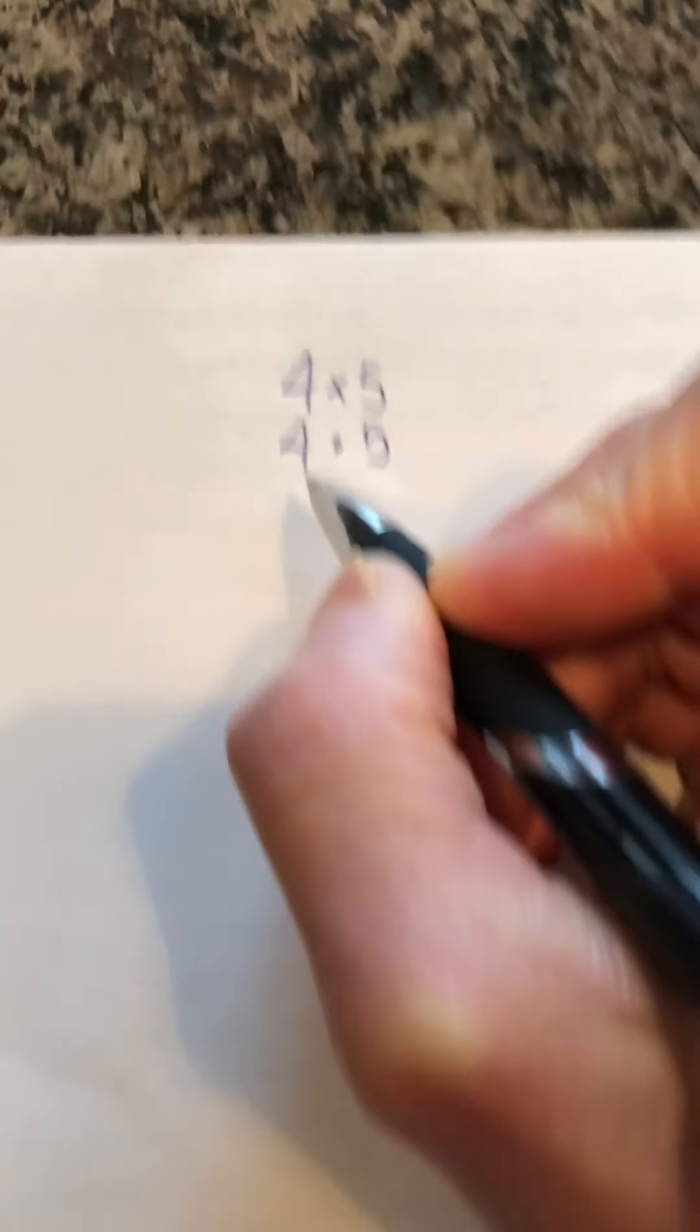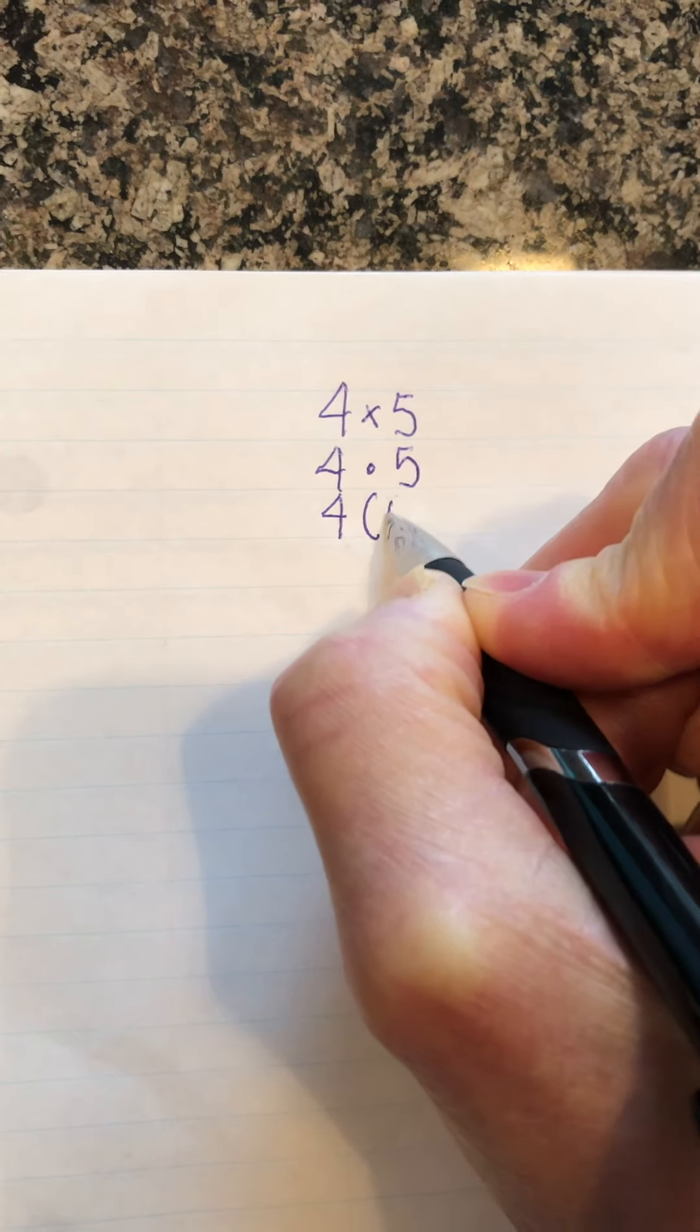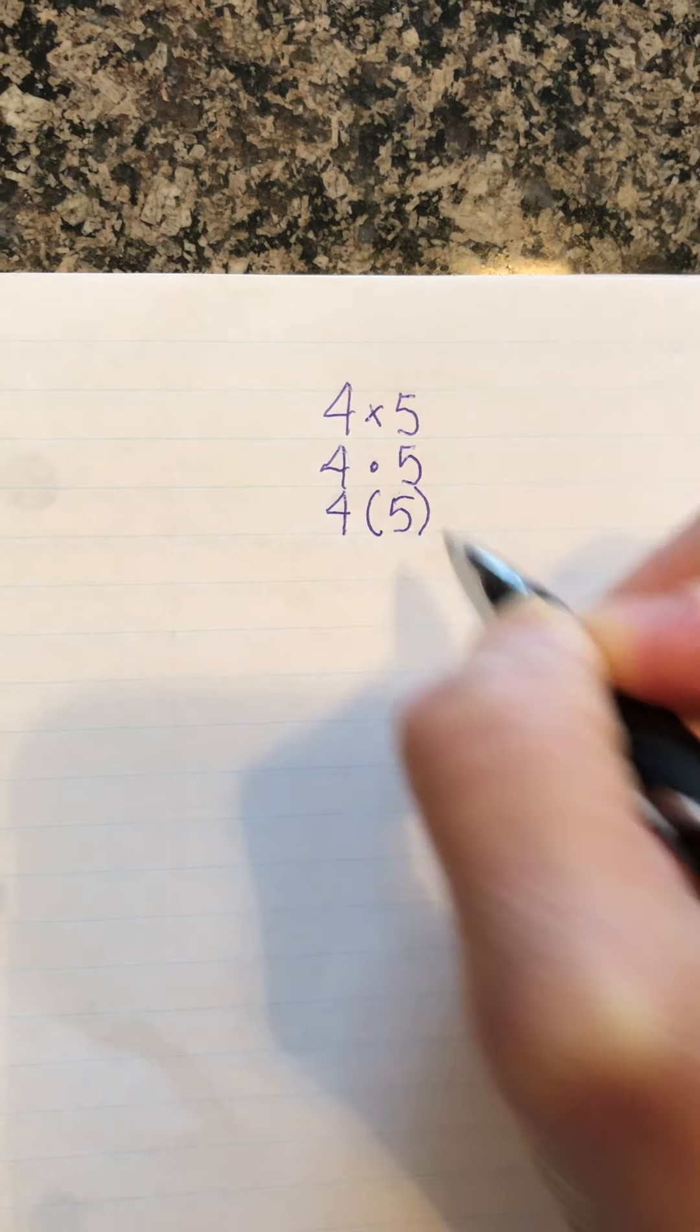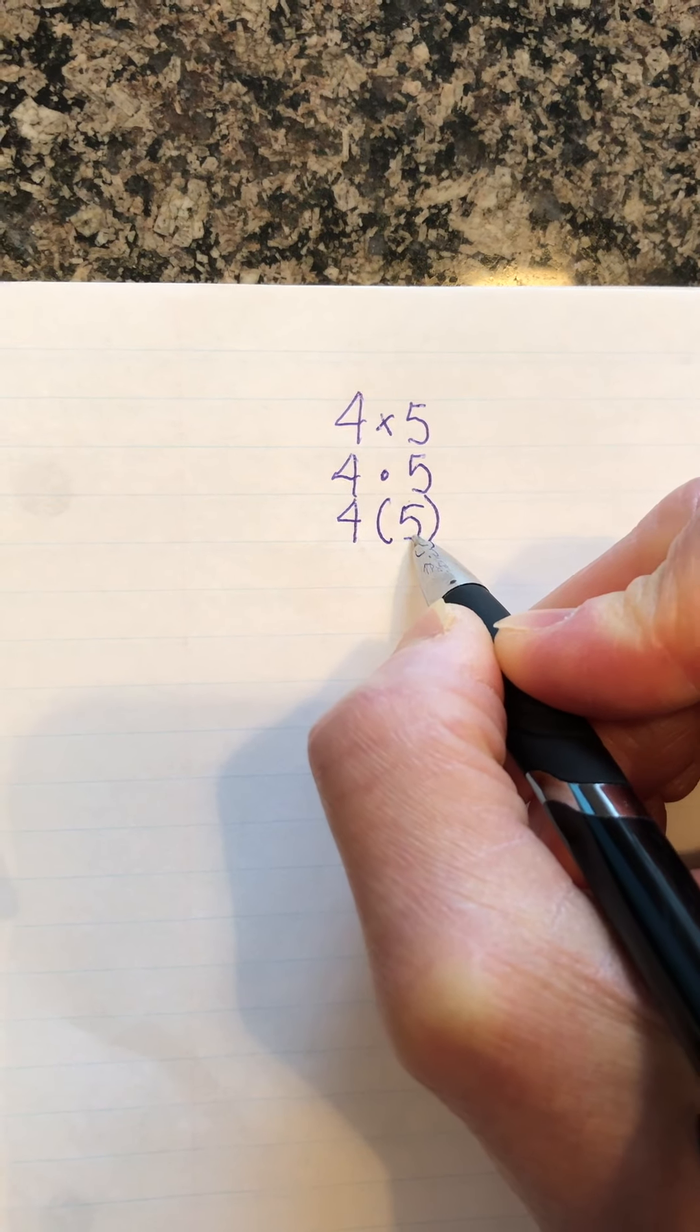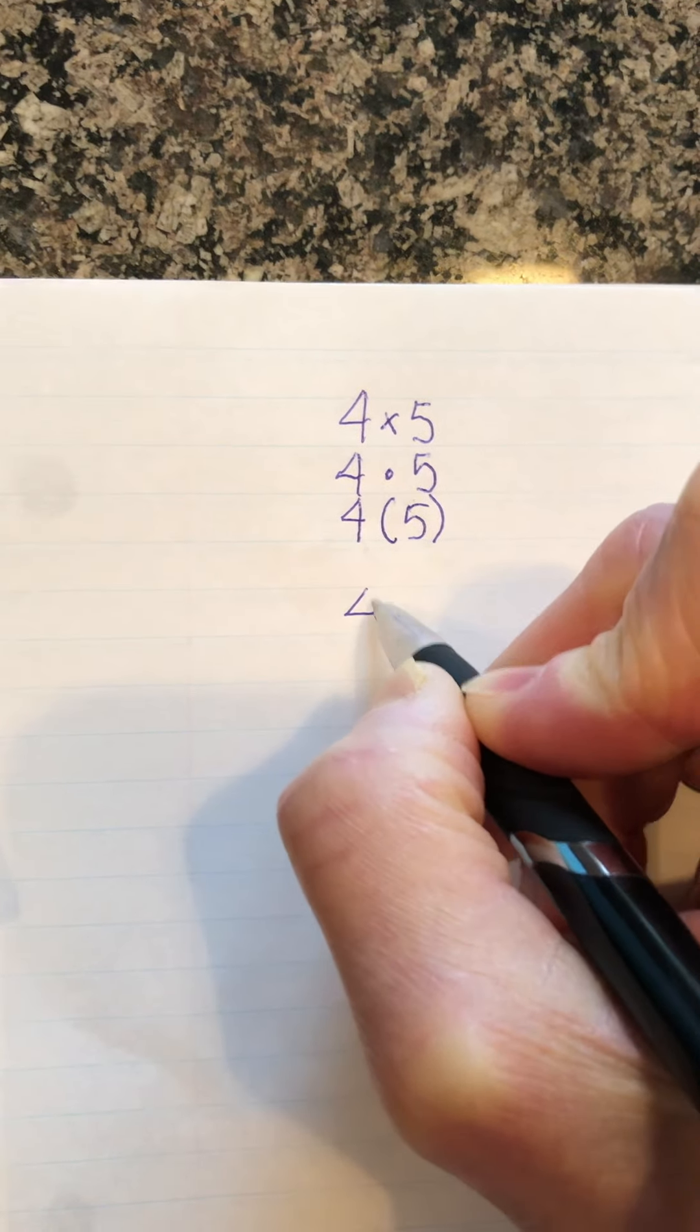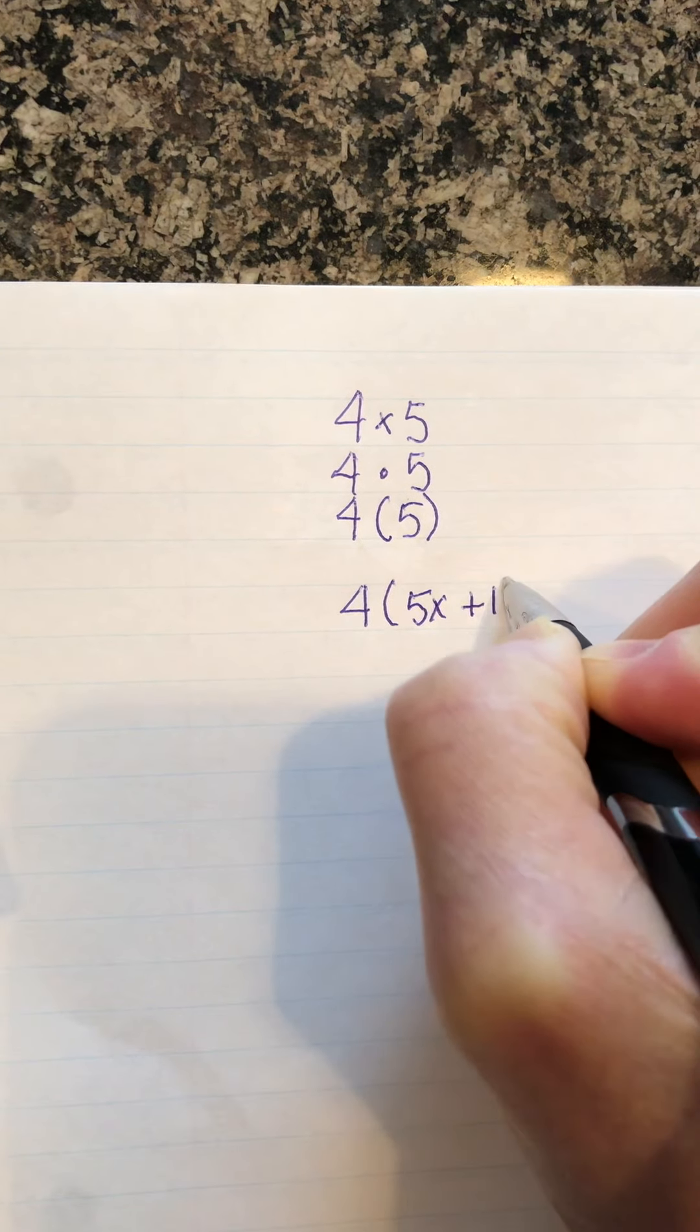But sometimes we can have also a bracket. So we sometimes go 4 times 5. And if inside that bracket we have an algebraic expression, we can go like this: 4 times 5x plus 1.